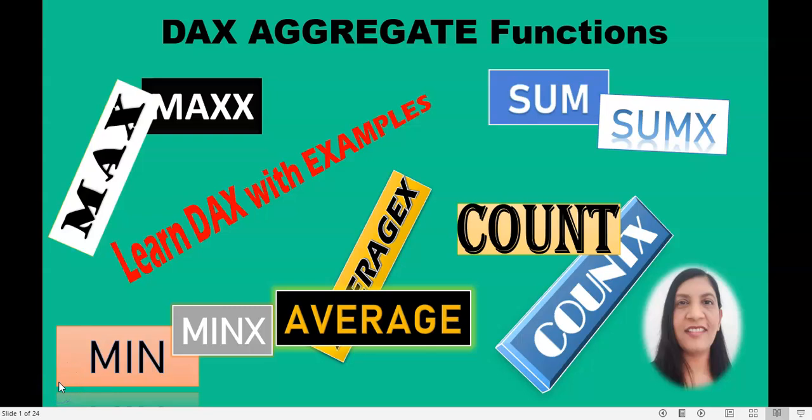Hello viewers, welcome to the Power BI course. Today we are going to learn a few DAX aggregate functions. DAX aggregate functions are like MIN, MAX, AVERAGE, COUNT, SUM, and their expression versions like MINX, MAXX, AVERAGEX, SUMX, and COUNTX. Aggregate functions aggregate column values or a couple of column values from a table and return a single value.